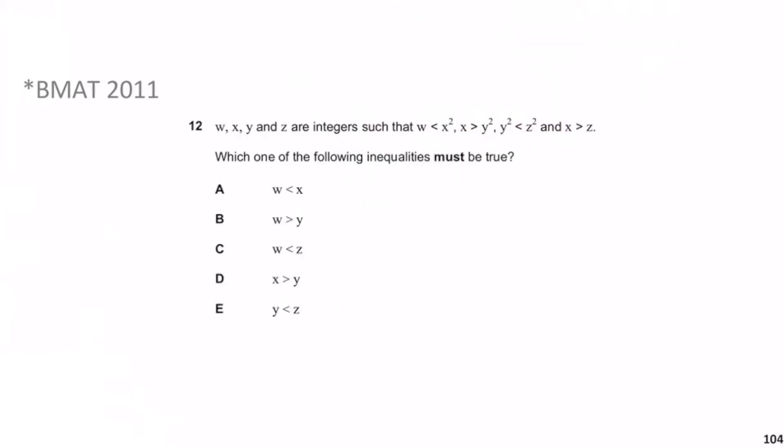Now we move on to BMAT 2011 — a starred question. w, x, y, and z are integers such that w < x², x > y², y² < z², and x > z. Which of the following inequalities must be true? Pause the video, give yourself a minute, then we'll go through the solution.